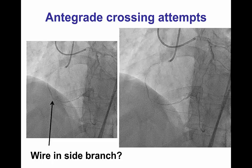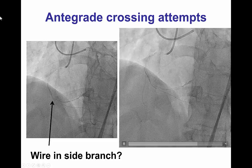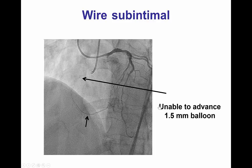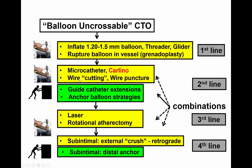We did several antegrade crossing attempts; however, the wire appeared to go into the subintimal space. We attempted to advance the microcatheter and a small balloon past the proximal cap, but were unable to do so. This is an example of a balloon uncrossable CTO, for which there are algorithms — it usually starts with a small balloon, threader, or grenadoplasty.